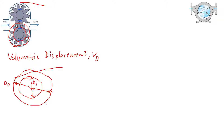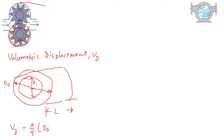The width of this gear is L. To calculate the volumetric displacement Vd, Vd equals π/4 times the area times the height — so π/4 times (D_O² minus D_I²) times L. That is the volumetric displacement.